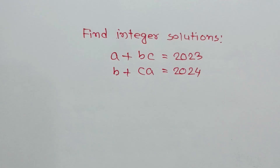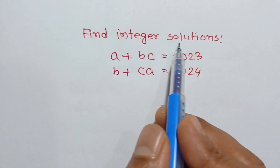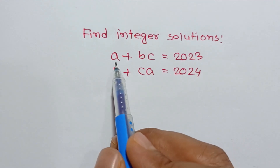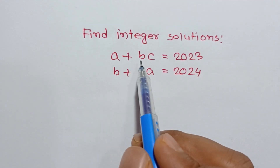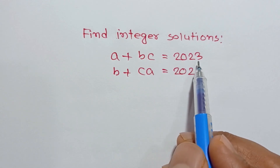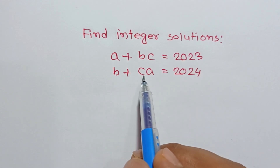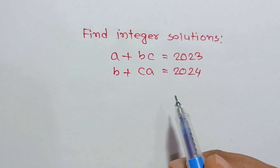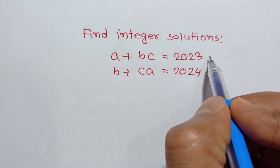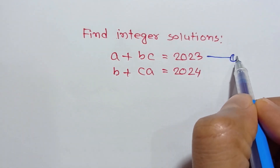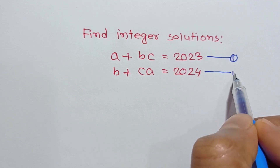Hi everyone. In this video I am going to find integer solutions for a system of equations: a plus bc is equal to 2023 — call this equation number one — and b plus ca is equal to 2024 — call this equation number two.